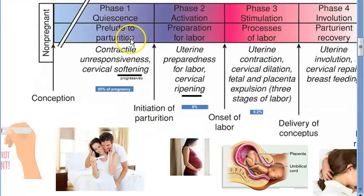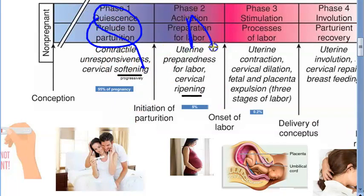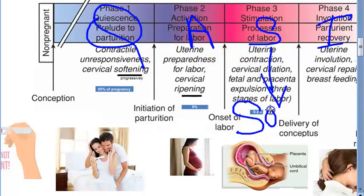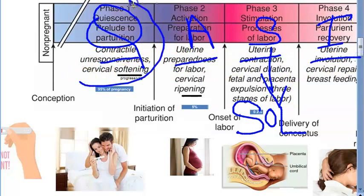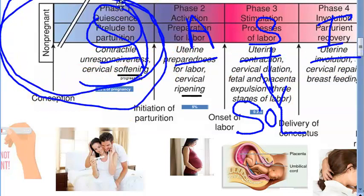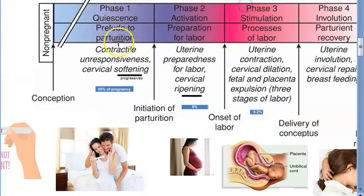Phase one is quiescence, phase two is activation, phase three is stimulation, phase four is involution. You can remember it as QASI or something like that. In stimulation you have all the stages of labor. Quiescence, activation, stimulation, and involution — remember quiescence is 95% of it, also called prelude to parturition.